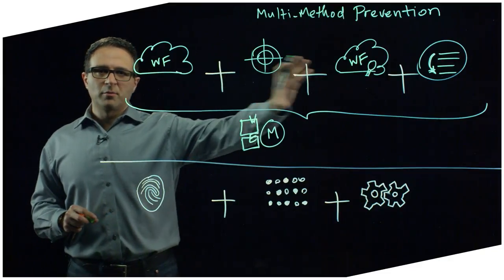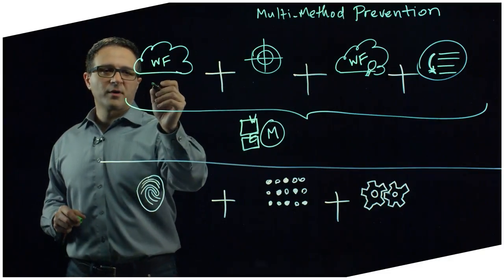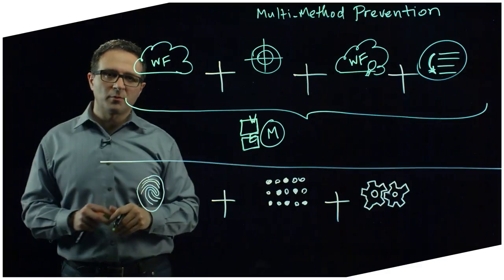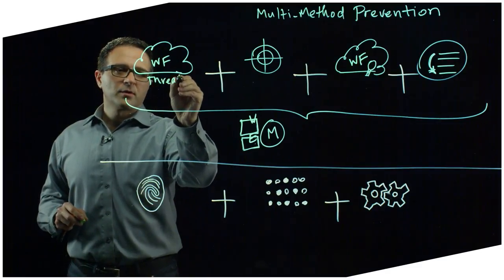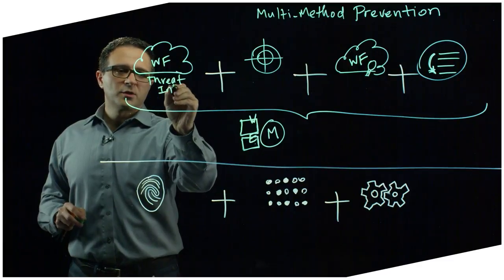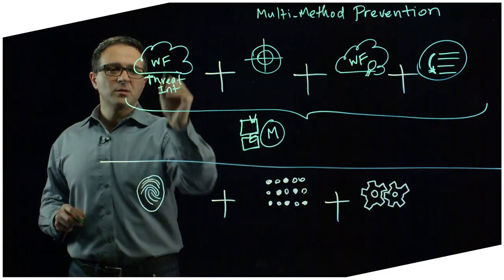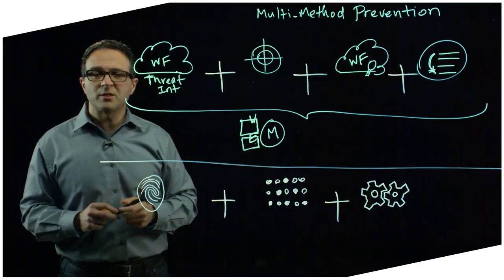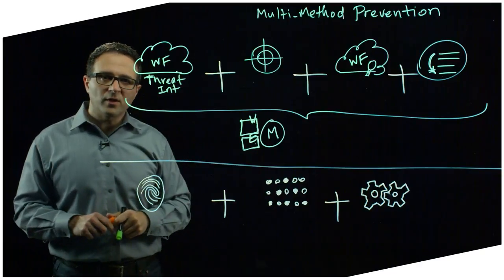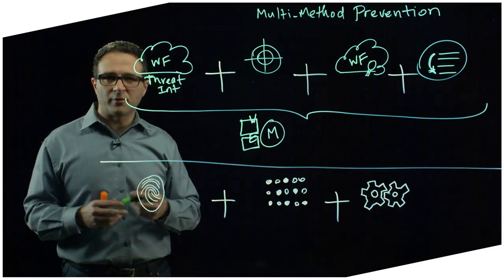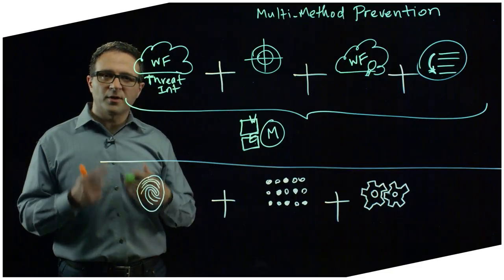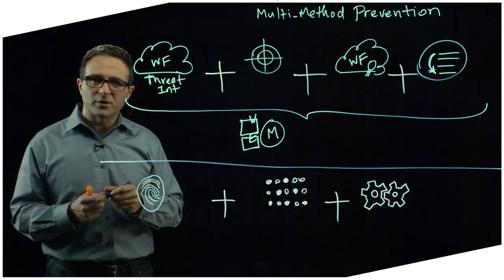On the malware prevention capabilities side, we use Wildfire to prevent known malware from compromising an endpoint. And here we use the threat intelligence that's stored in Wildfire to identify anything that has been seen before, any malware that has been seen before. And Wildfire is a cloud-based malware analysis and threat intelligence repository for us. And all of our customers and all of their Palo Alto Networks technologies are submitting threat intelligence to Wildfire for analysis.